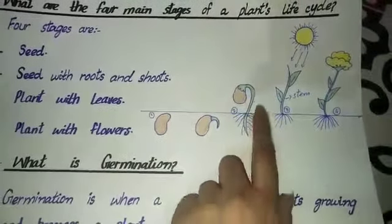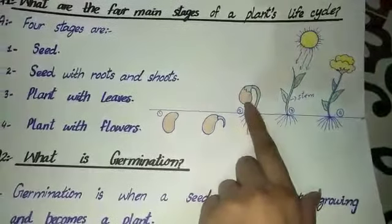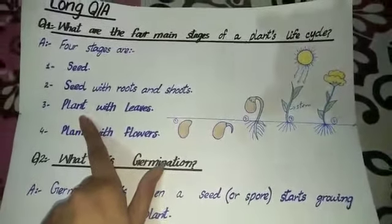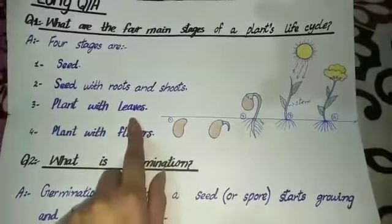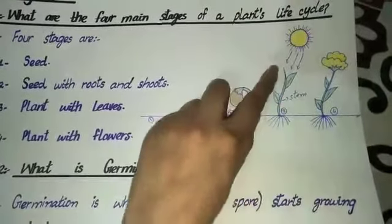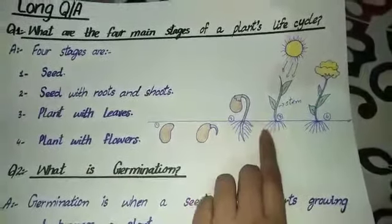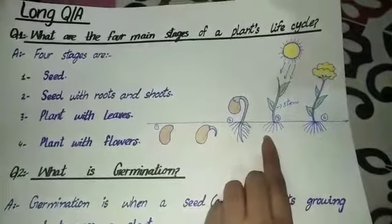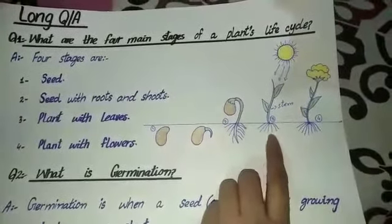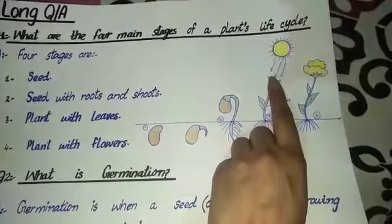اب یہ باہر آ گیا تو یہ easily move کر سکتا ہے اور اس کو sunlight بھی directly sun سے provide ہوگی۔ The third stage is plant with leaves۔ یہ جو درمیان میں ہوتا ہے یہ اس کا stem ہوتا ہے۔ Roots spread ہوئی ہوئی ہیں اور یہ roots soil میں جتنے بھی nutrients اور water ہوں گے وہ سب absorb کر لیں گی اور وہی food اور water roots سے لے کر پورے plant کو provide کریں گی۔